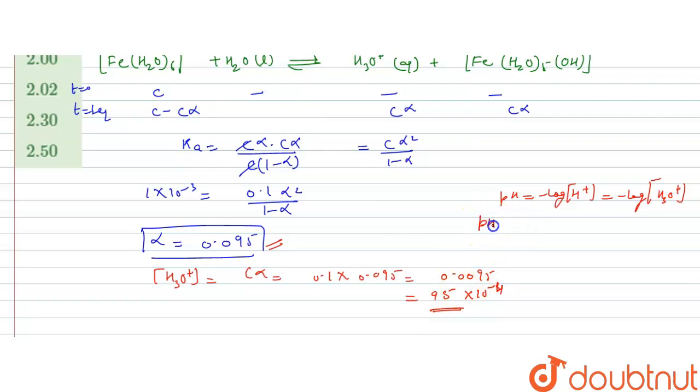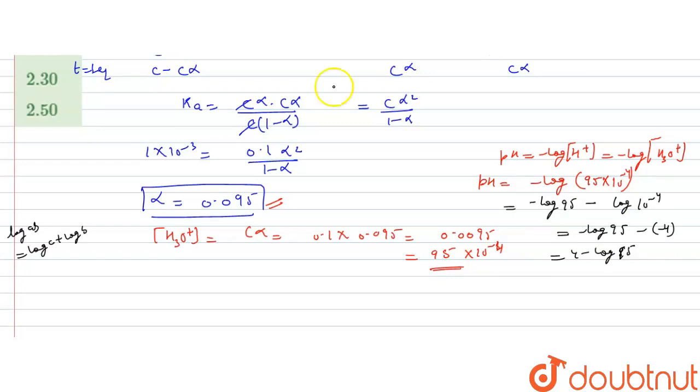Now, we have to calculate pH. So, it will be minus log hydronium ion concentration that is 95 into 10 raised to the power minus 4. So, by applying the identity that is log AB is equal to log A plus log B. So, it will be equals to log 95. This minus sign will be here plus log 10 raised to the power minus 4. But, there is minus sign. So, we will write log 10 raised to the power minus 4. That will be minus log 95 minus this minus 4 will come here and log 10 value is 1. So, it will be 4 minus log 95. And log 95 value is 1.98.